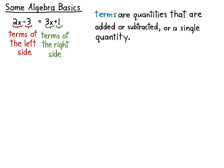But first, terms that are being added and subtracted. So here I have 2x - that's a term of the left side of this equation. The negative 3, or minus 3 if you want, is a term of the left side of this equation. The 3x is a term of the right side of the equation, and the 1 is a term of the right side of the equation, because these are being added and these are being subtracted.